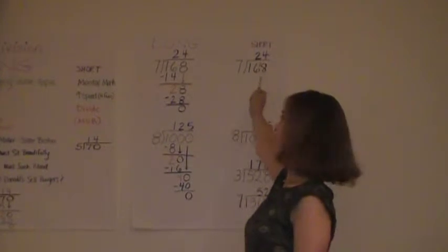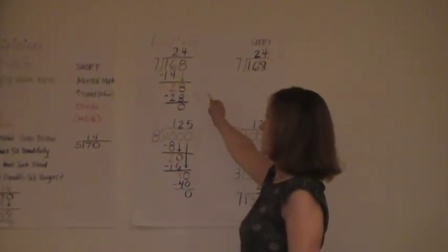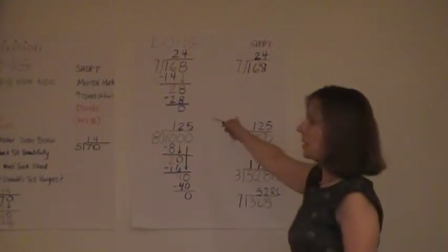And then you bring down the 8, you say 7 into 28 is 4 and that winds up being 28 minus 28 is 0.